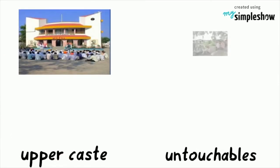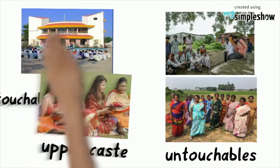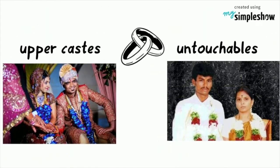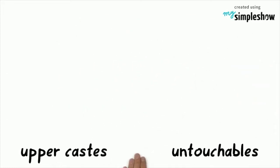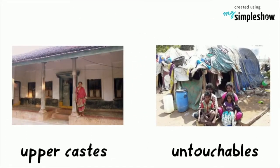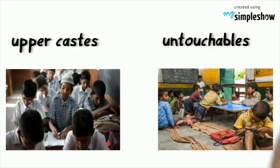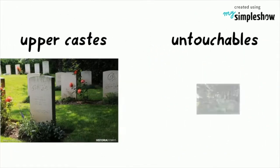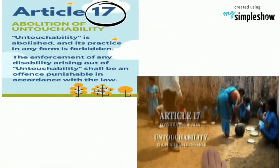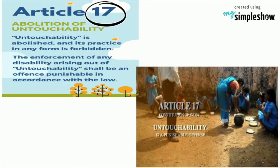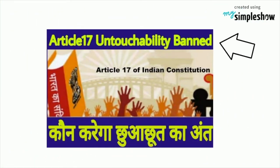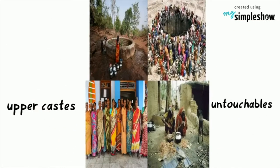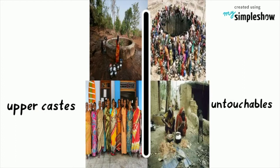The upper castes and untouchables lived in segregated colonies. One could marry only within one's caste. There is segregation in housing communities, school and education, medical and hospital care, and even burial grounds. Article 17 of the Indian Constitution states that untouchability is abolished and its practice in any form is forbidden. Despite its constitutional abolition, the practice of segregating untouchables remains very much a part of rural India.